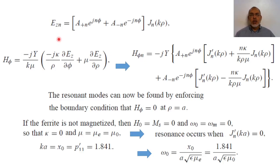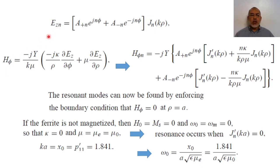Welcome back. This is the second video in the analysis of the strip-line junction circulator. As mentioned previously, the analysis will be presented in four videos. In the previous video, we established that the electric and magnetic fields inside the ferrite resonator can be represented by E_z and H_phi, and additionally H_rho. Now we are going to focus on H_phi specifically.